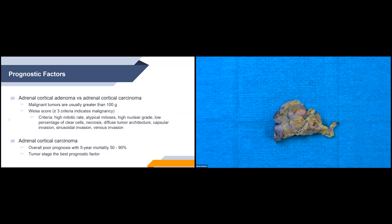Distinguishing adrenal cortical adenomas from adrenal cortical carcinomas can be difficult. Size can be a good indication for malignancy — malignant tumors are usually greater than 100 grams. The Weiss score is a common system used for histopathologic reporting to diagnose benign and malignant adrenal tumors. It's based on the presence or absence of specific histologic criteria such as high mitotic rates, atypical mitosis, necrosis, and capsular invasion. The presence of three or more criteria indicates malignant behavior.